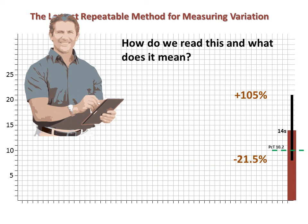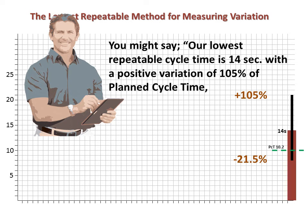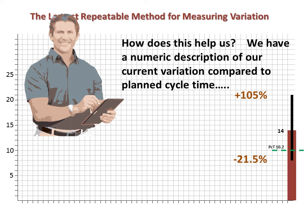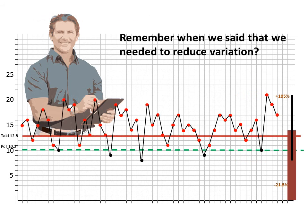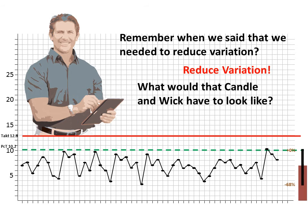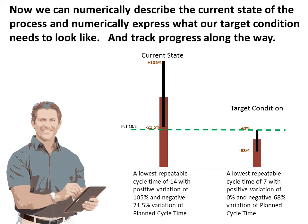How do we read this and what does it mean? What does it tell us about our process? You might say: our lowest repeatable cycle time is 14 seconds with a positive variation of 105% of planned cycle time and a negative variation of 21.5% of planned cycle time. We now have a numeric description of our current variation compared to planned cycle time. Remember when we said that we needed to reduce variation? If we worked towards reducing the variation seen in the process, could it look like this? This would be the result of work to both reduce variation and to speed up the process. Now we can numerically describe the current state of the process and numerically describe what our target condition needs to look like. And we can do the same to track progress along the way.